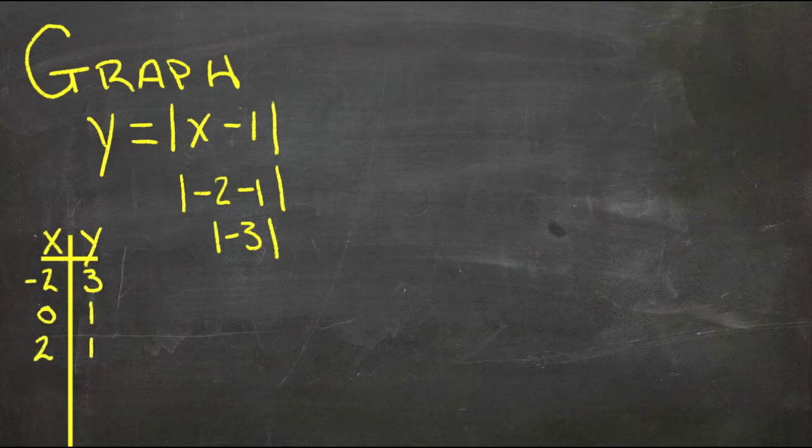And what about when x is 1? If x is 1, we get 1 minus 1, that's 0, and the absolute value of 0 is 0. So when x is 1, y is 0. And that looks like it might be a turnaround point here. We'll take a look at that when we get to the graph.